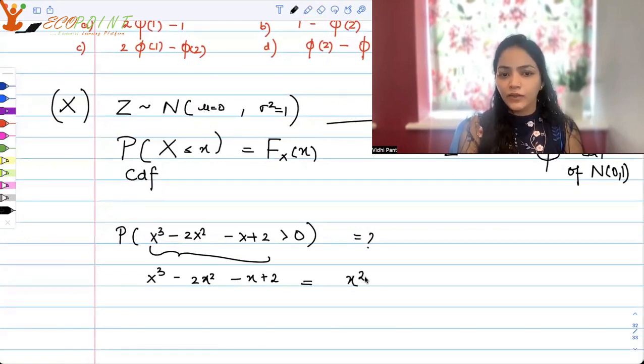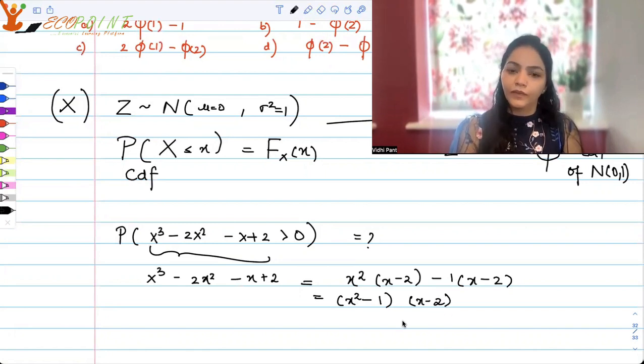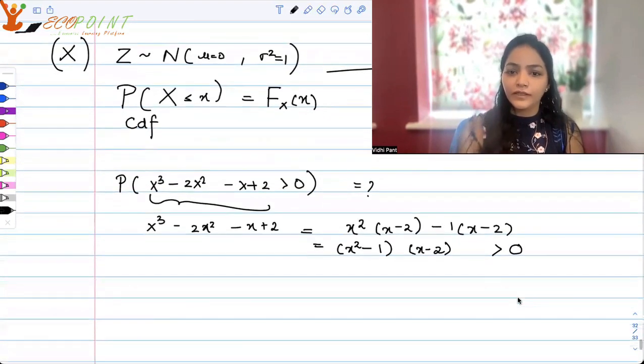I think I can take X² common easily and I'll get (X - 2) here. If I take minus 1 here, I will get (X - 2) here. So that means this is factoring out as (X² - 1)(X - 2). So I require (X² - 1)(X - 2), the product of these two factors as positive, greater than 0.